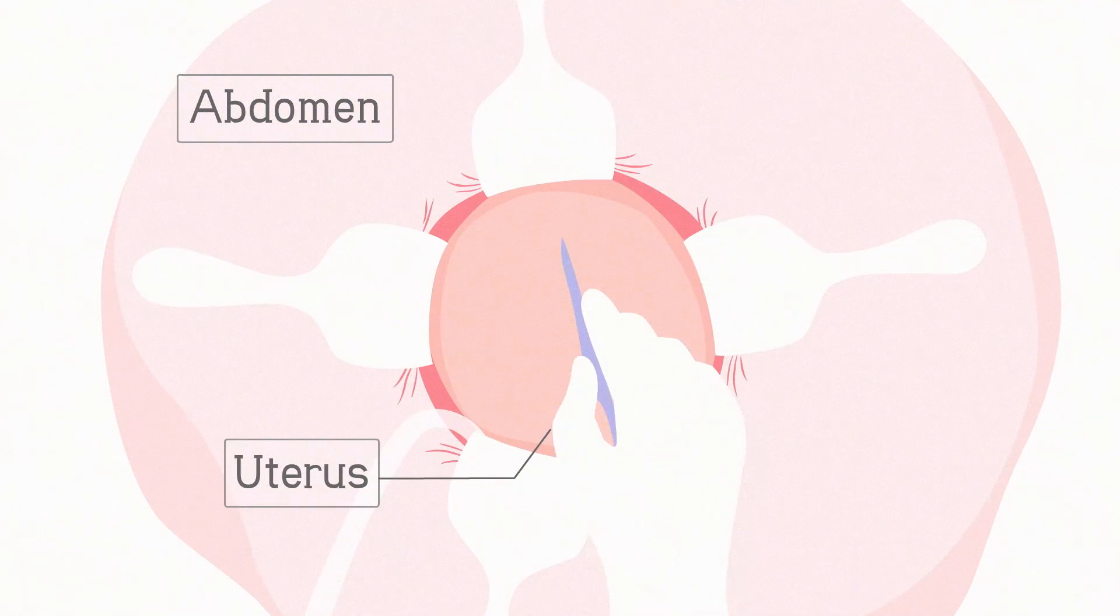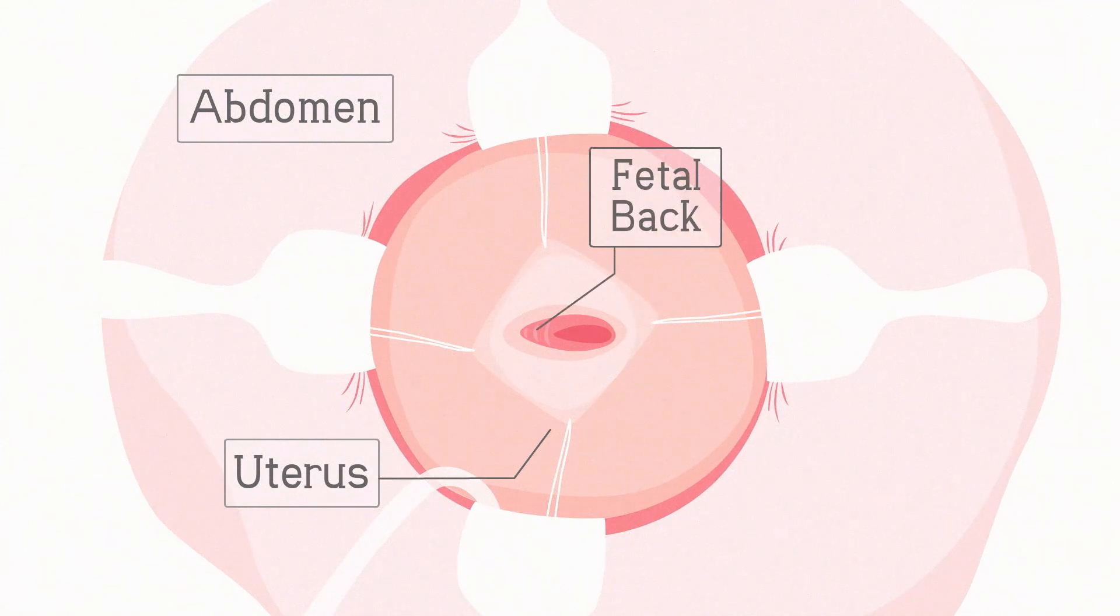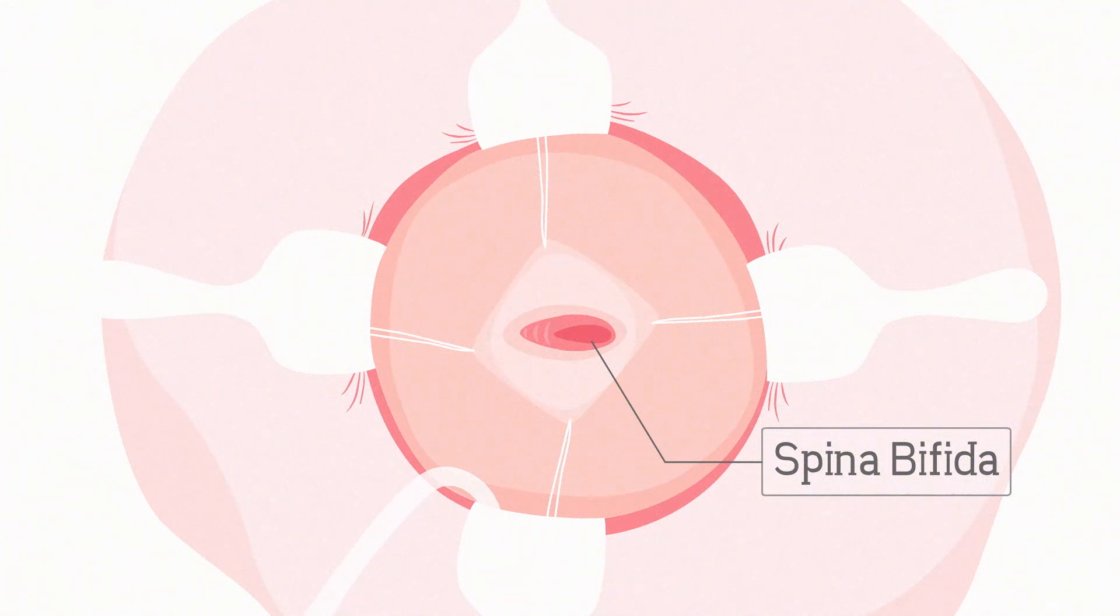Surgeons open the abdomen and uterus in a similar way to cesarean section and expose the spina bifida defect in the fetus.